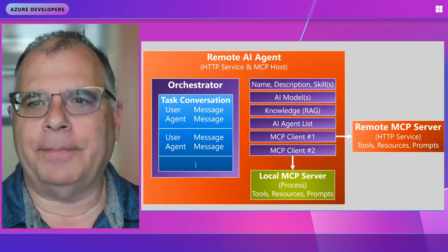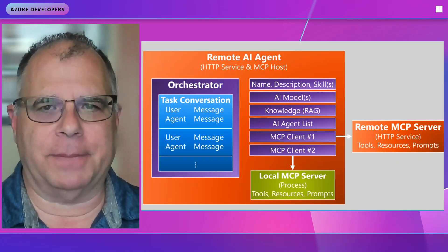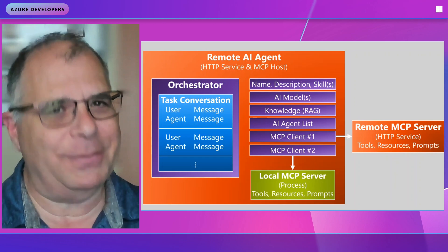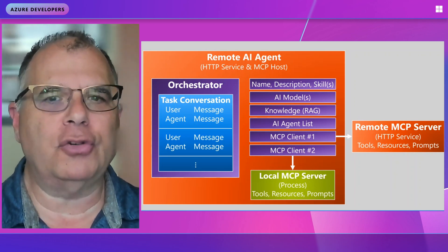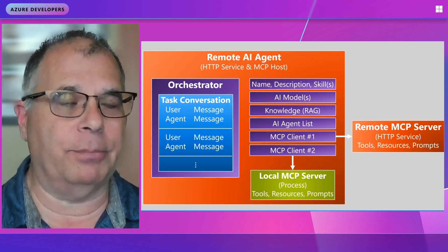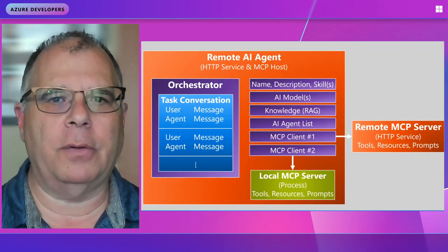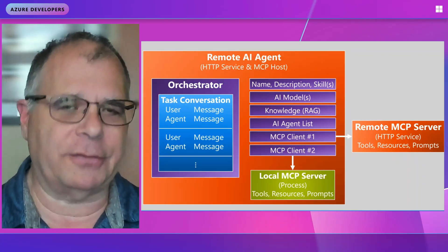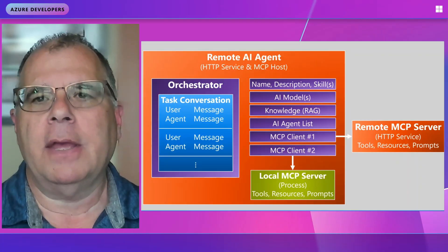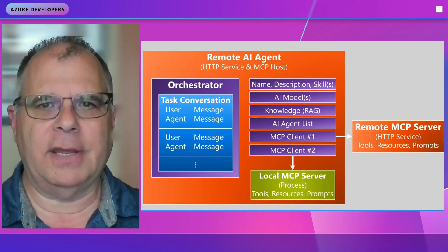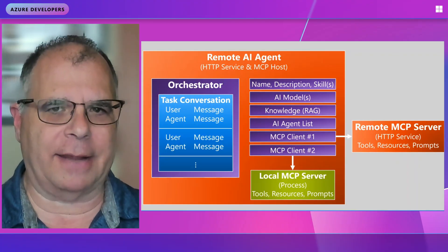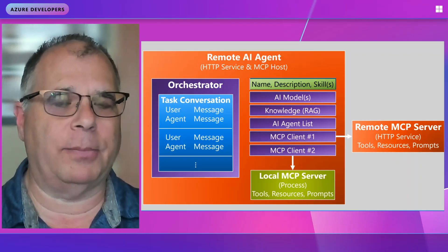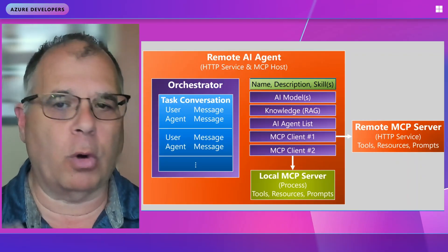As you can see on this slide, the big orange box is an AI agent. AI agents are typically implemented as HTTP services, and they usually are a host for MCP components. So the agent is an HTTP service and it is also an MCP host. The purpose of an agent is that it specializes in accomplishing a particular task — it usually has a name, a description, and a set of skills it's capable of doing work on.